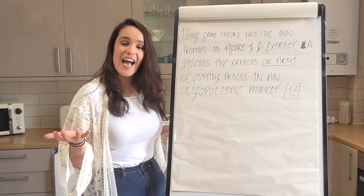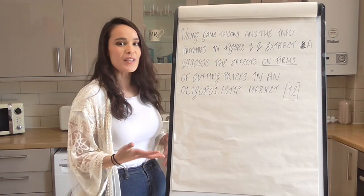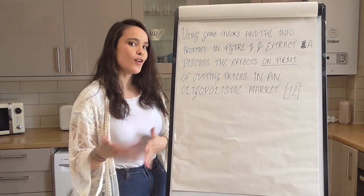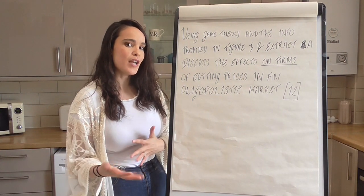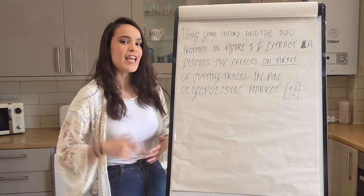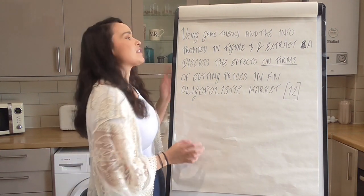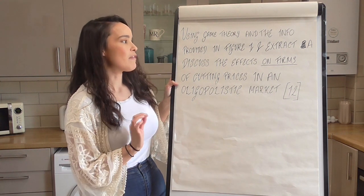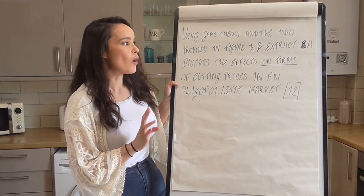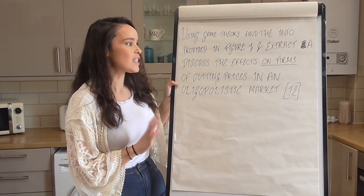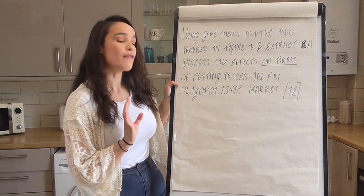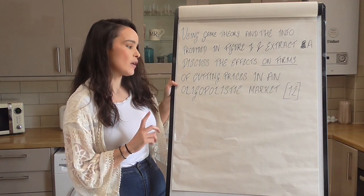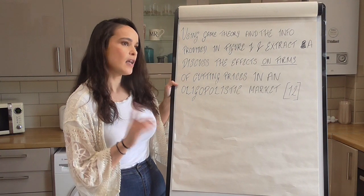Today we're going to be looking at some exam questions. The exam question I set for you guys on Google Classroom - here it is. Using game theory and the information provided in Figure 1 and Extract A, discuss the effects on firms of cutting prices in an oligopolistic market.